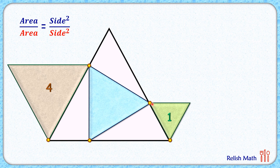For this green triangle, if the side length is x centimeters, since the area ratio is 1:4, the side ratio will be the square root of that, which is 1:2. Thus, for this brown equilateral triangle the side length will be 2x.